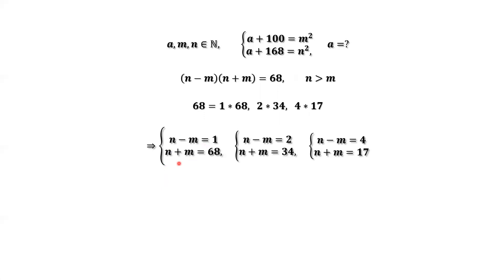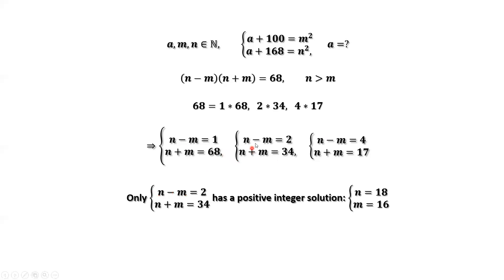For the first system, N minus M equals 1 and N plus M equals 68. For the second system, N minus M equals 2 and N plus M equals 34. For the third system, N minus M equals 4 and N plus M equals 17. Solving these three systems, only the middle system has a positive integer solution: N equals 18, M equals 16.